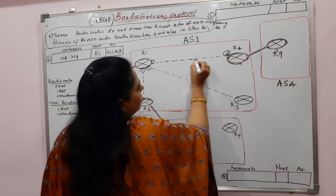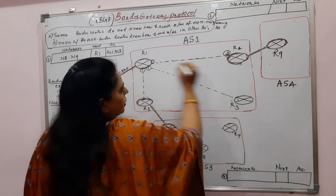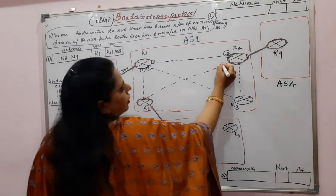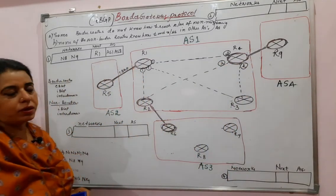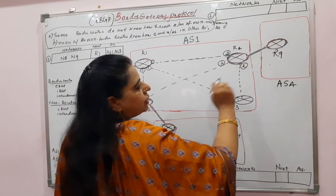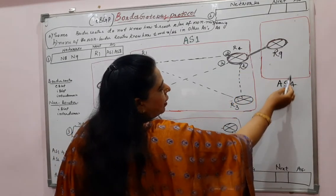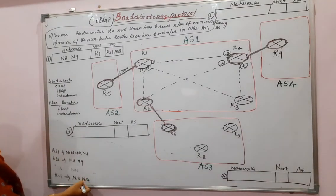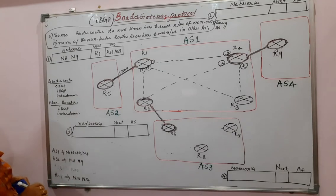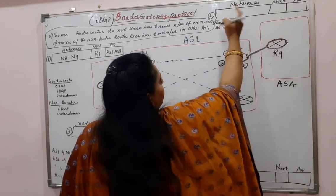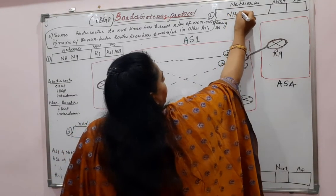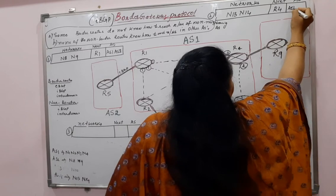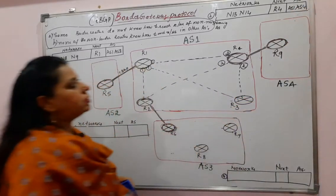R4 will also establish sessions with its internal routers. R4 is the border router connected to AS4, and AS4 has networks N13 and N14. So message number 2 conveys to the internal routers that you can reach N13 and N14 via R4. The autonomous systems involved are AS1 and AS4.